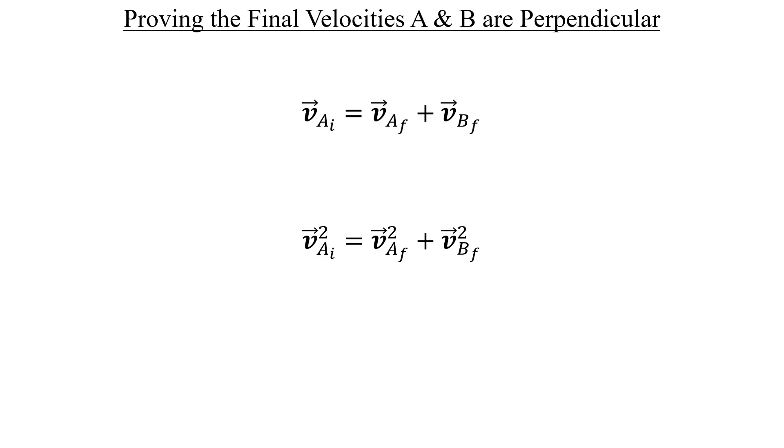Now I know it doesn't look like we have much here, but check this out. I'm going to label the momentum equation number one and the energy equation number two. Let's take equation number one and square it. When we do that, we'll get the following. Next, I'll subtract equation number two from this result.